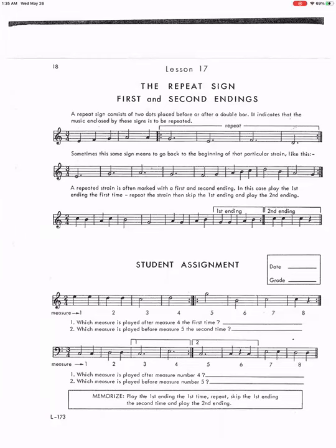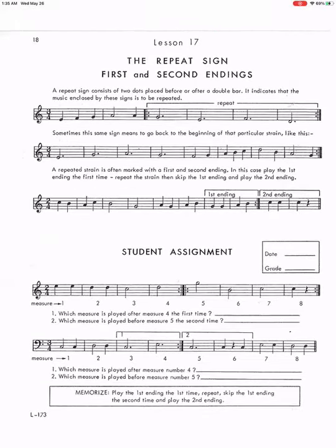This is Master Theory, Book 1, Lesson 17, where we're talking about a repeat sign, first and second endings.